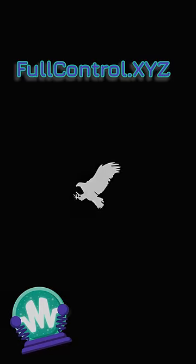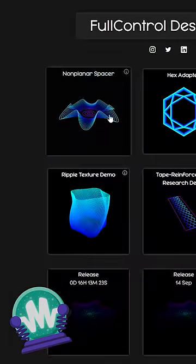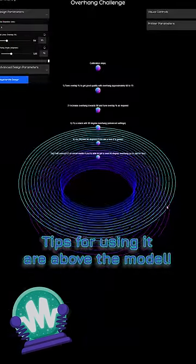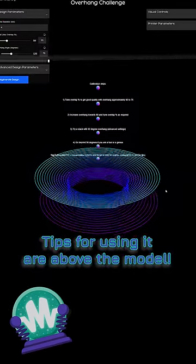If you head to Full Control dot XYZ, you will find there is non-planar printing, but what we're looking for is the overhang challenge. In here, you can change parameters, change printers and get this set up so you can run it.